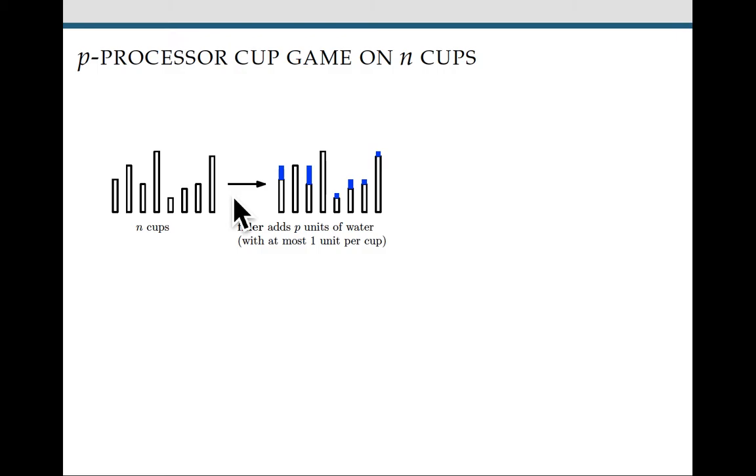I'll represent the amount of water in a cup with the height of a rectangle. Every round, the filler is going to start by distributing P units of water amongst the cups, with at most one unit to any particular cup. I've shown this here in blue.